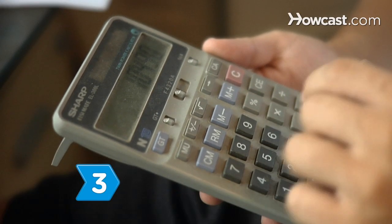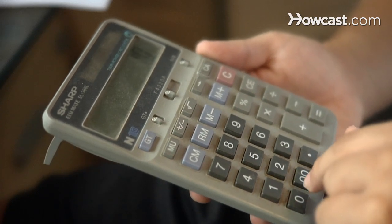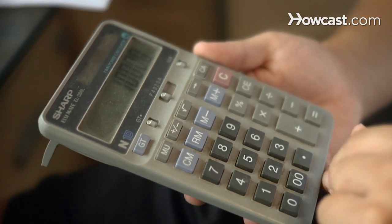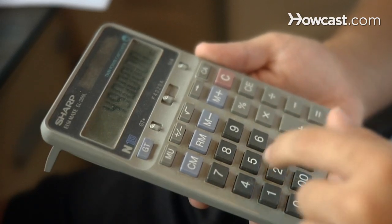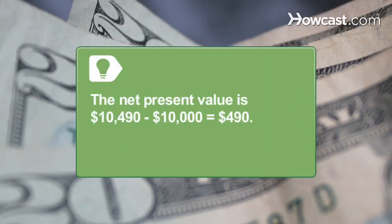Step 3. Calculate the net present value by subtracting the initial investment from the computed present value. The net present value is $10,490 minus $10,000 equals $490.